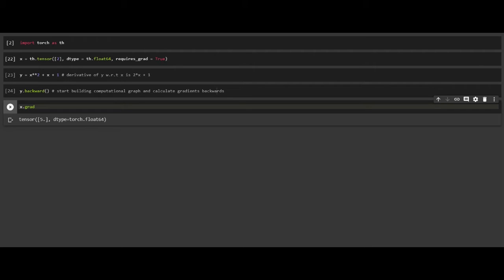Let's have a quick real example. Here Y is a function of x square plus x plus 1, whose derivative with respect to x containing single item 2 is 2x plus 1. Y dot backwards sets up building the computational graph. And here we have the gradient. Putting 2 in 2x plus 1, we get 5 as the result.